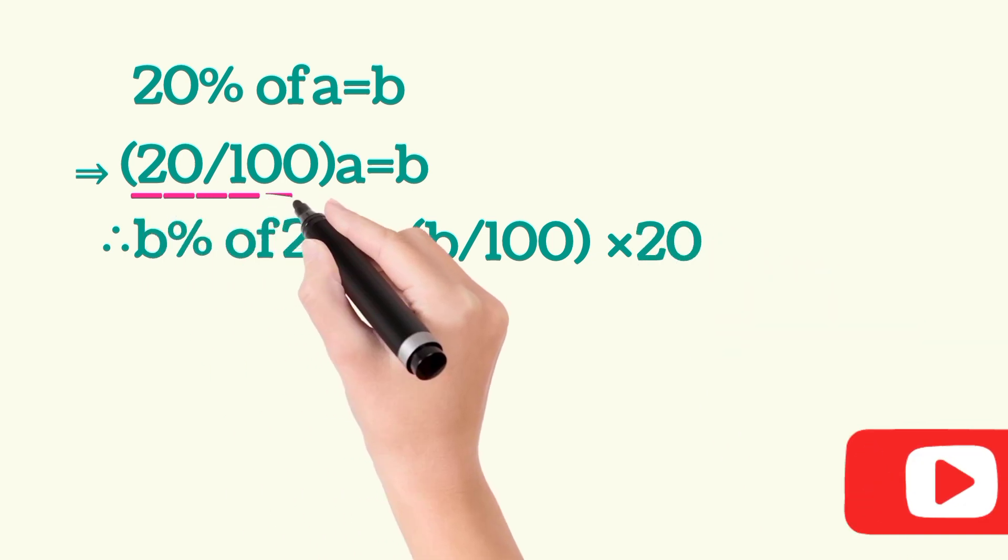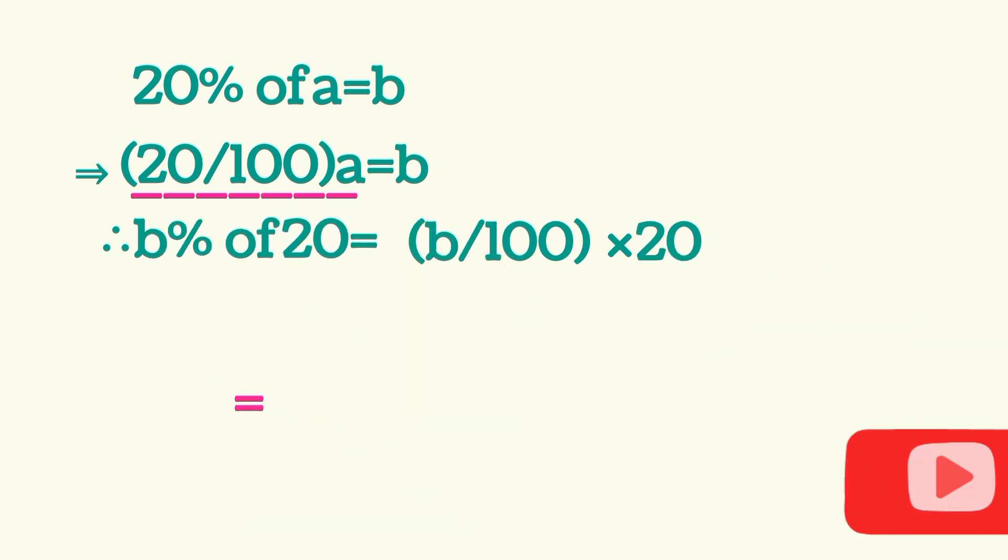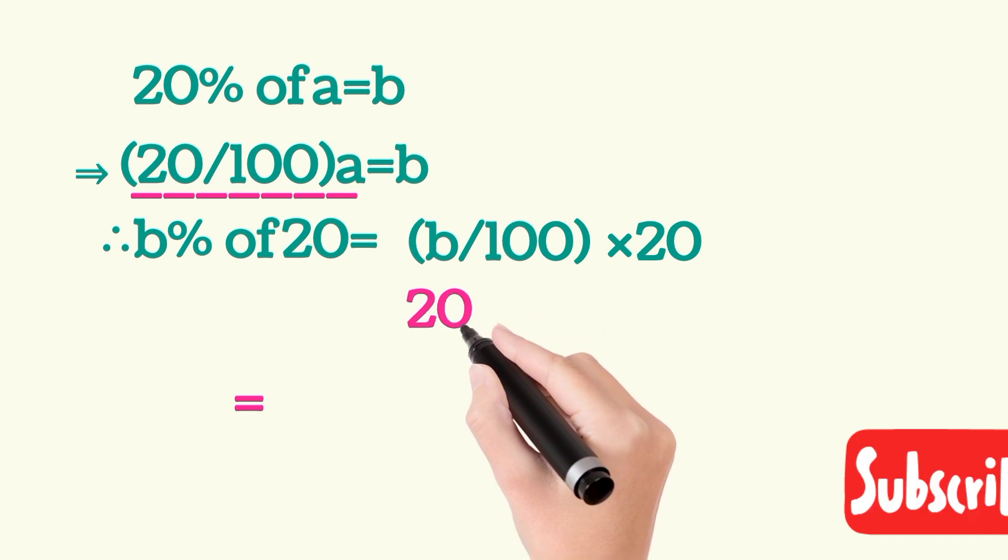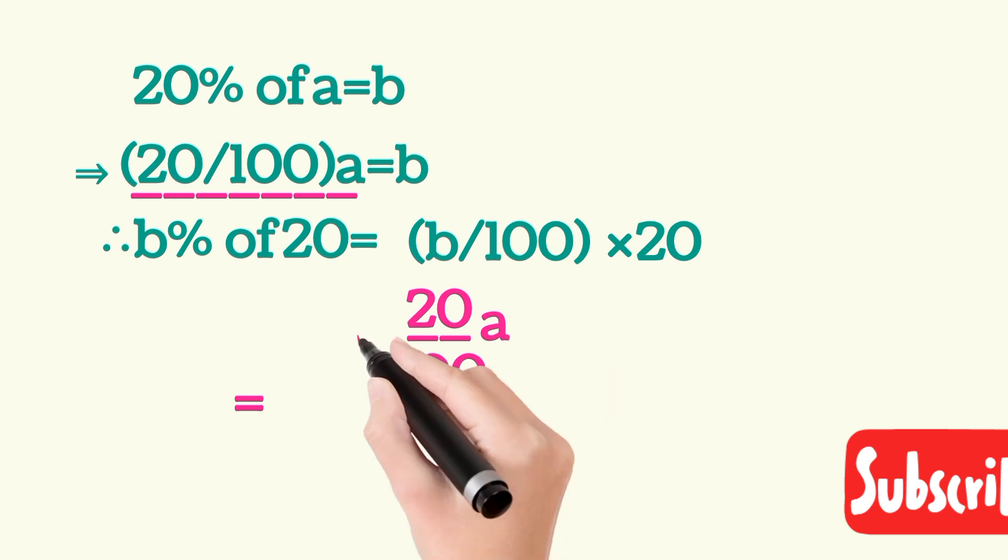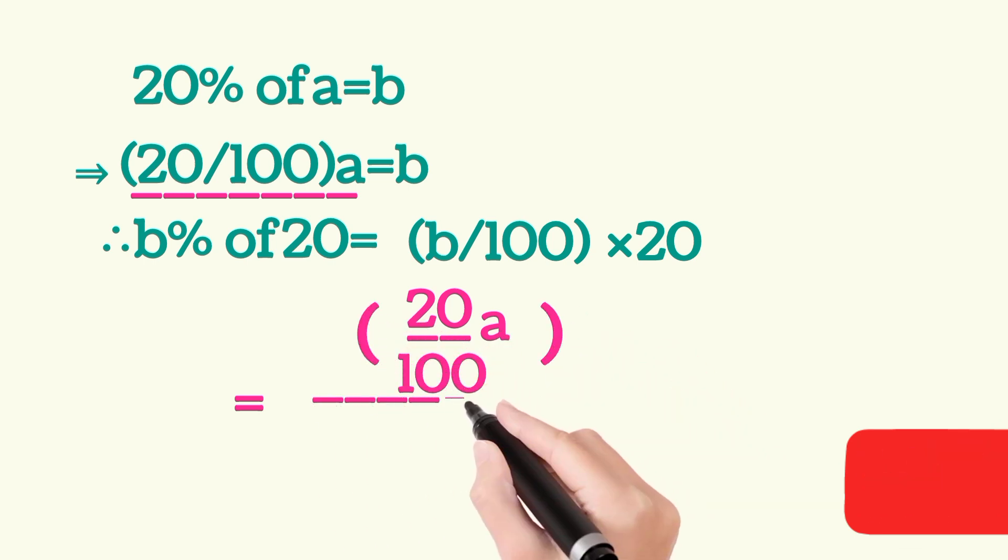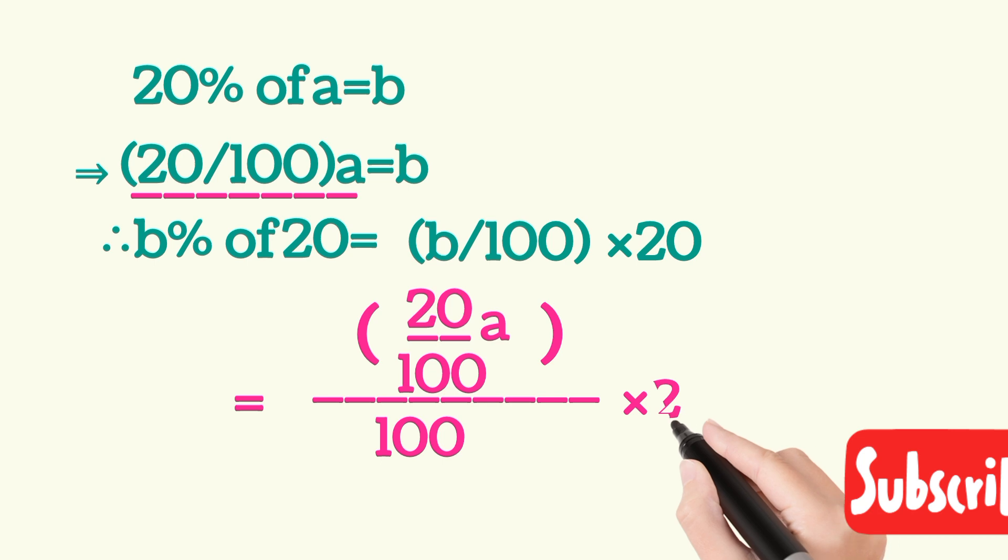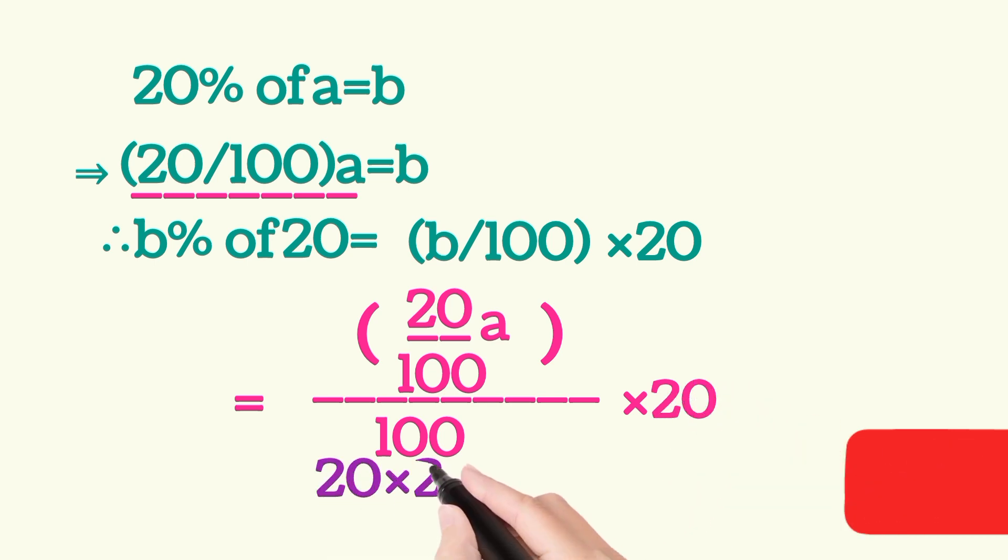Now, B is 20 upon 100 into A. So this will become 20 upon 100 A upon 100 into 20. This can be written as 20 into 20 into A upon 100 into 100.